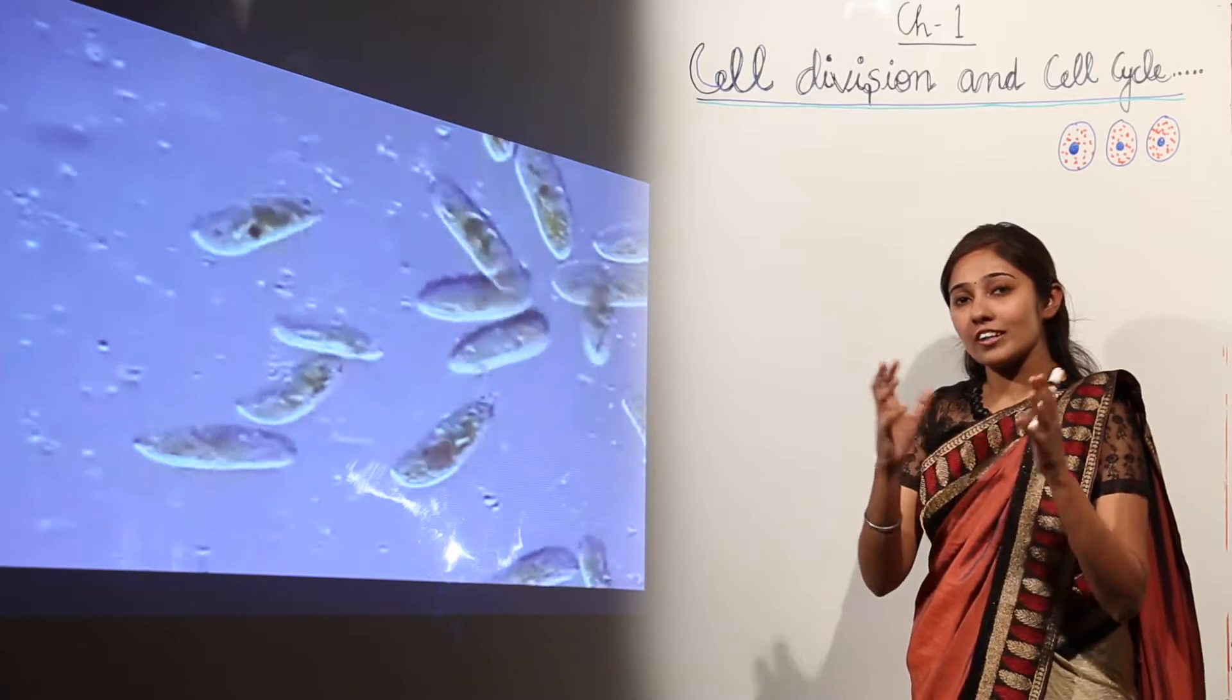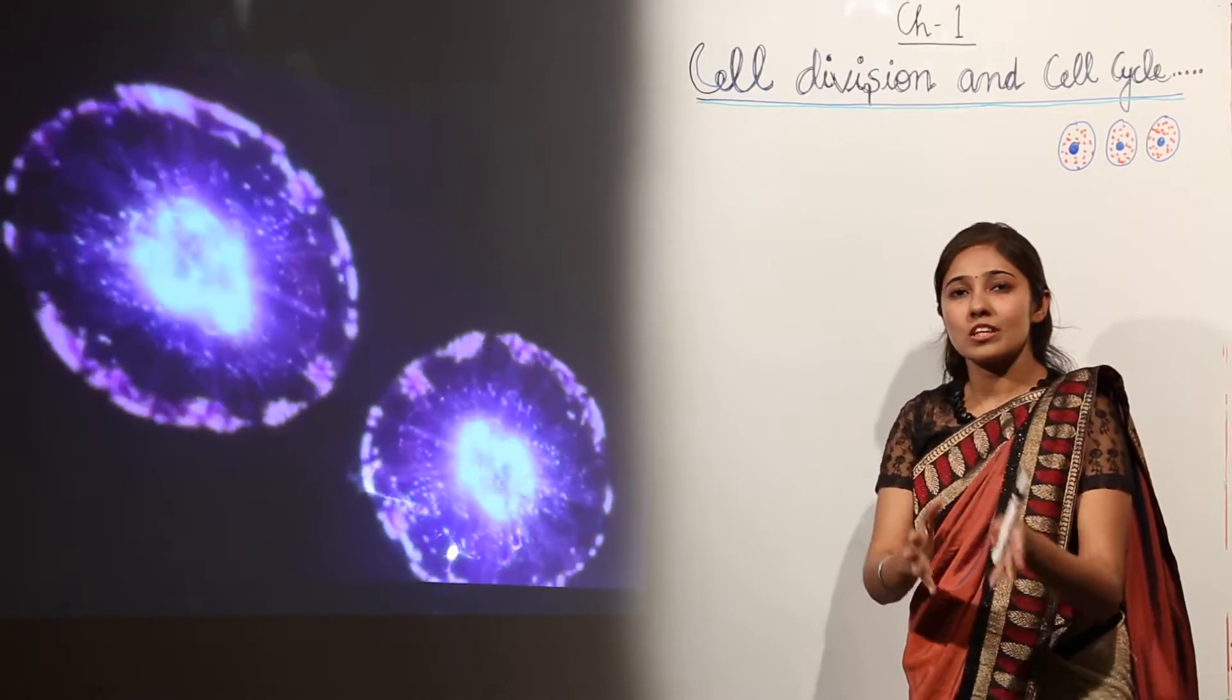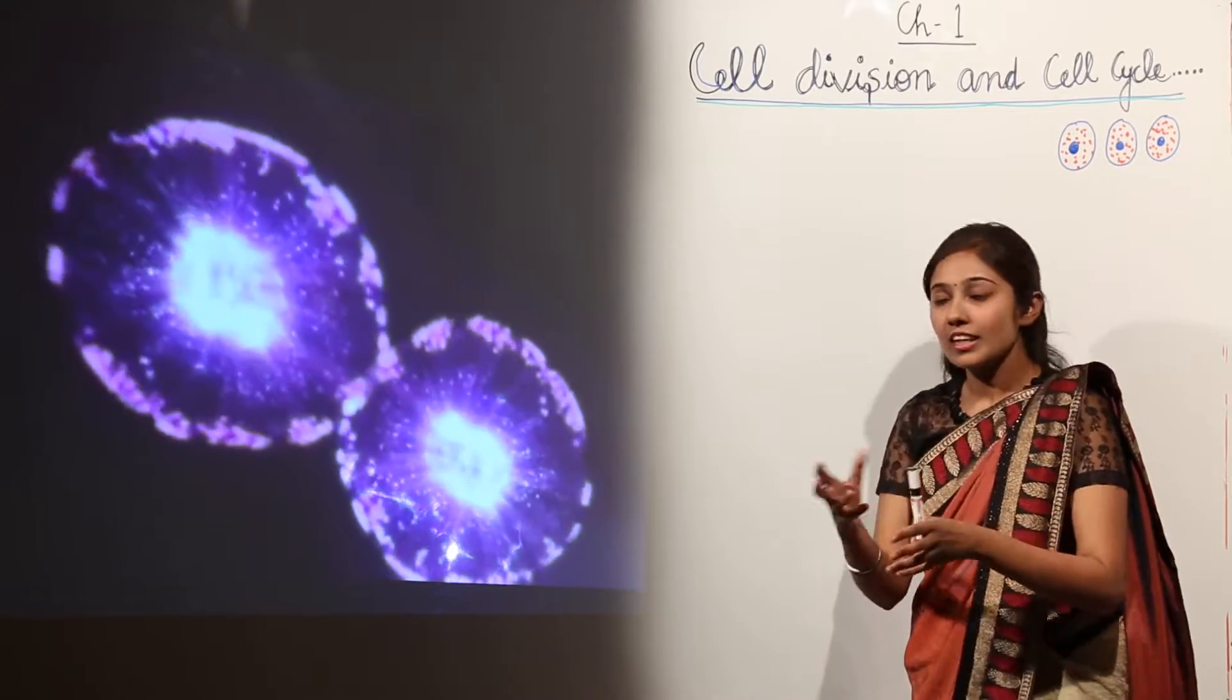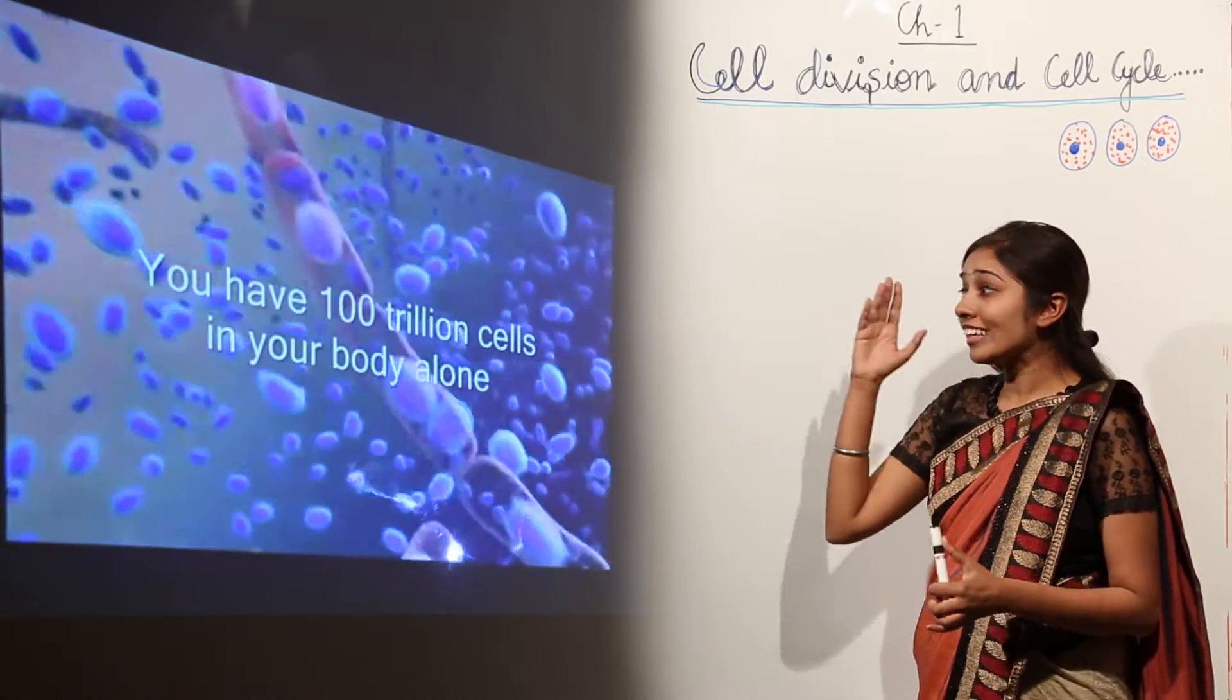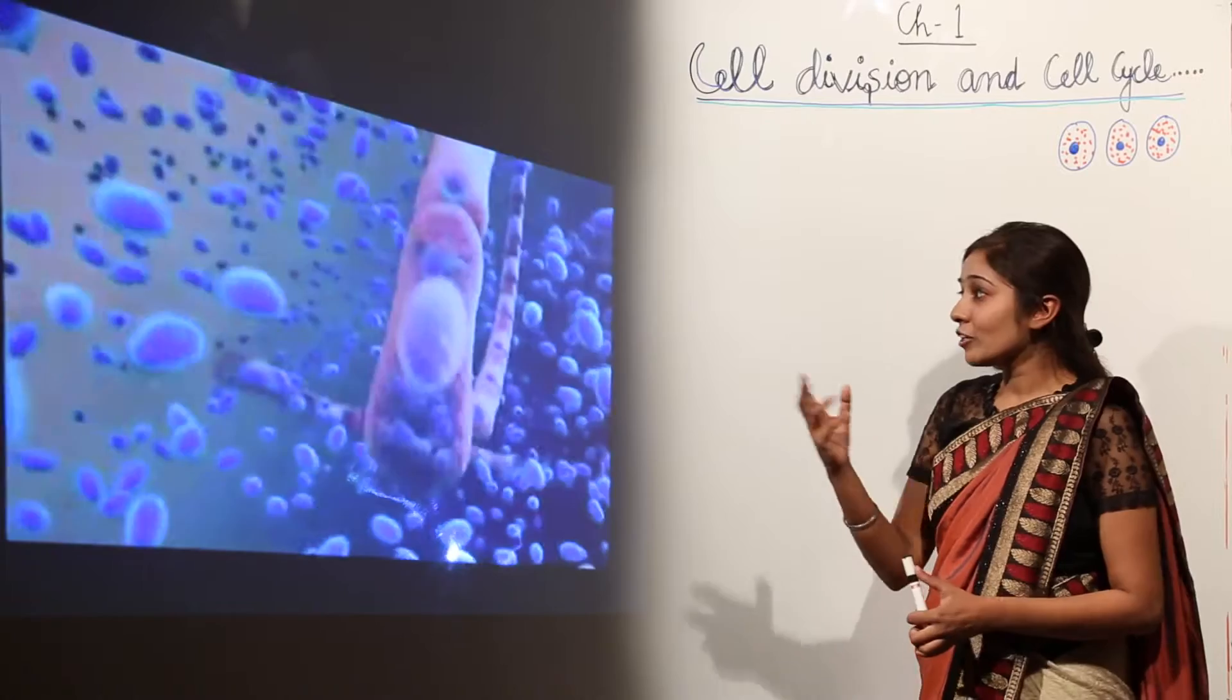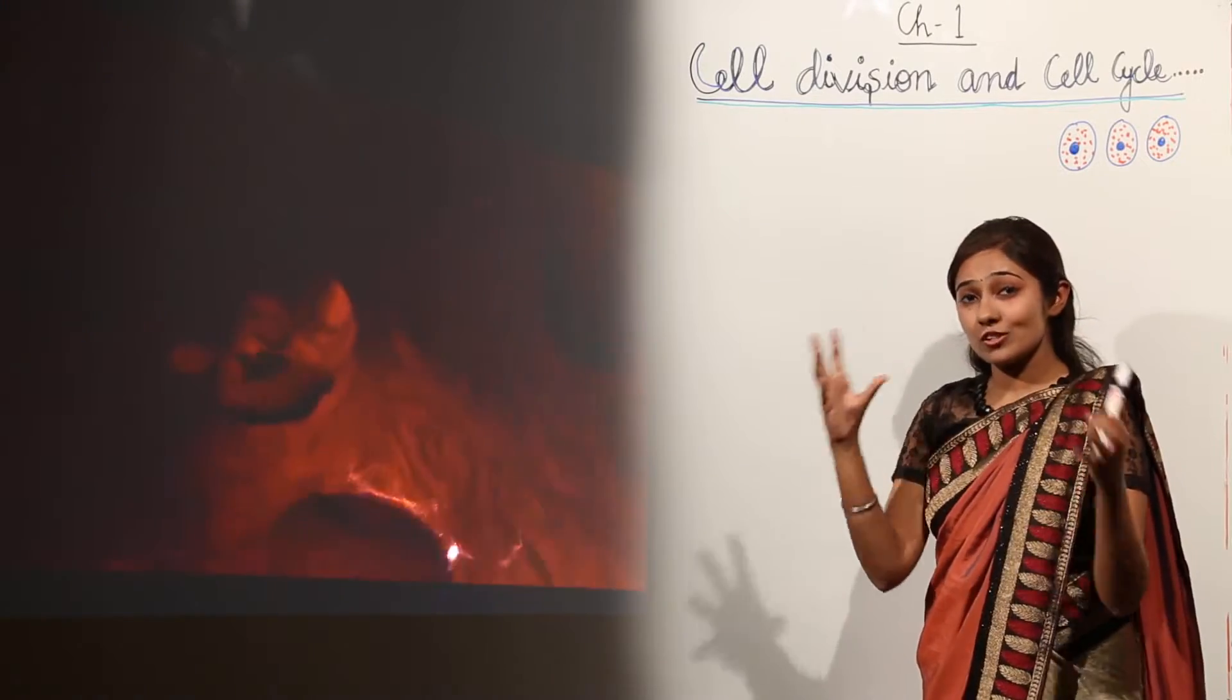about cells, we have different organisms - some unicellular, some multicellular - and they perform different functions. In our body, we have a hundred trillion cells. Can you imagine the different shapes and sizes of cells